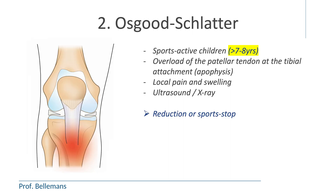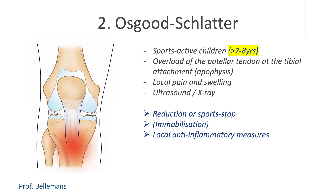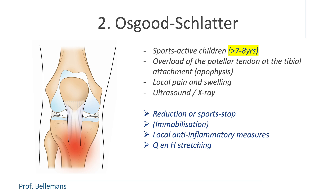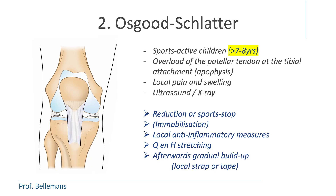The treatment consists of an immediate reduction or sports stop. In some severe cases, even temporary immobilization in a cast or brace is needed to put the leg into complete rest. In more mild cases, some local anti-inflammatory measures — such as an anti-inflammatory pomade, gel, or patch — are sufficient. It is also important to bring the quadriceps and hamstring muscles to length through a stretching program, because these muscles are usually too short in these kids as a consequence of growth. Once the pain is gone, a gradual buildup in sports is allowed again, with help of a protective strap or tape.